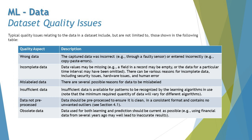Insufficient data is also a common issue. As we learned in previous tutorials, sometimes we may not have enough data. Insufficient data means there is not enough for patterns to be recognized by the learning algorithm in use. Note that the minimum required quantity of data will vary for different algorithms, so you need to know what the sufficient amount of data is for your particular ML algorithm.